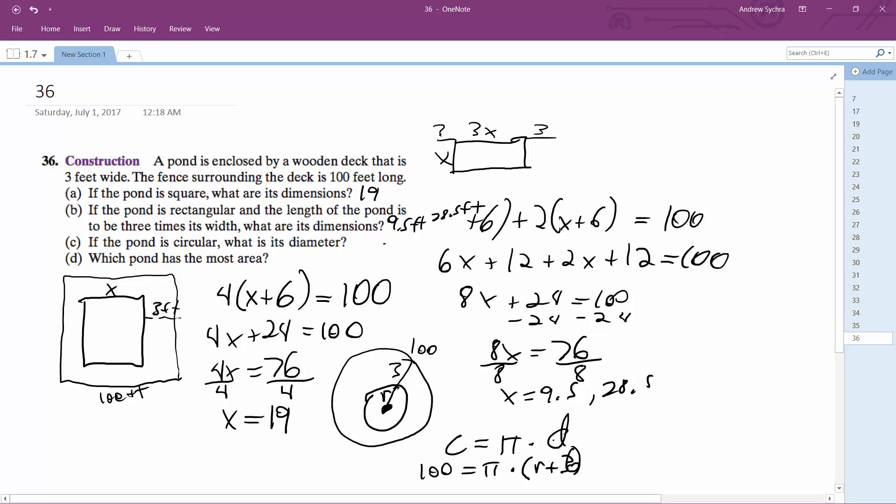So 100 divided by pi—oh, this should be plus 6. I almost made that mistake. And I should call this D plus 6 because it's 3 on both sides. I could have done 2 times r plus 3, but so D plus 6 is equal to 100 divided by pi.